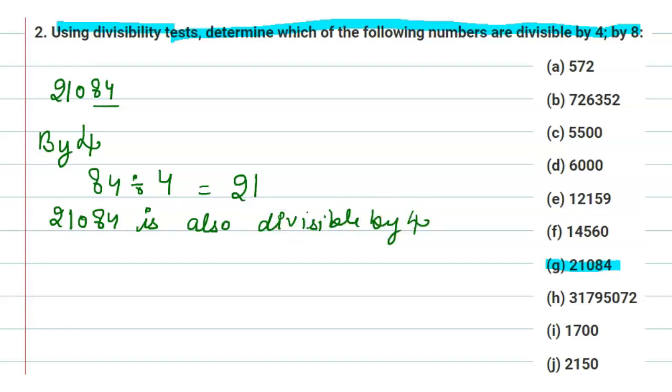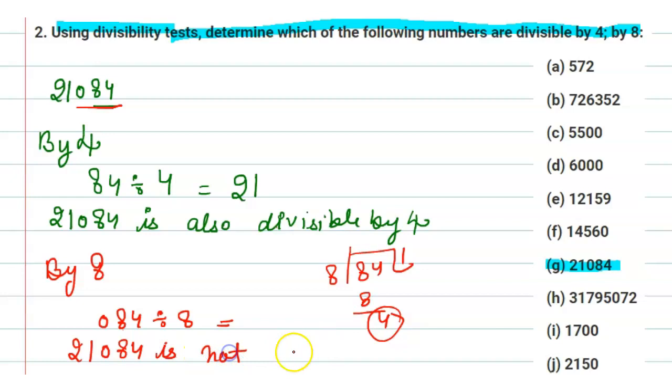Now check the divisibility rule of 8. If the last three digits are divisible by 8, then we can say that the whole number is divisible by 8. You can see that here 084 is not divisible by 8. 8 ones are 8 and 4 is the remainder. So we can write here 21,084 is not divisible by 8.